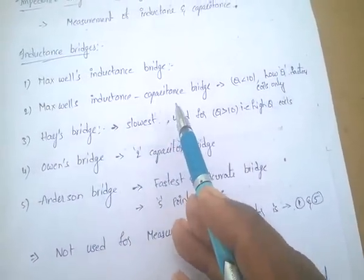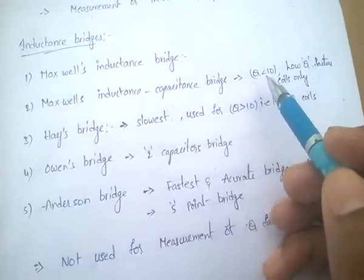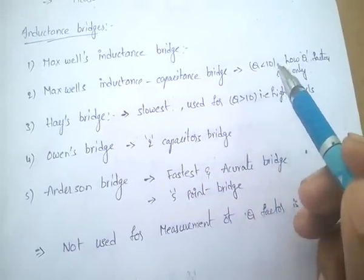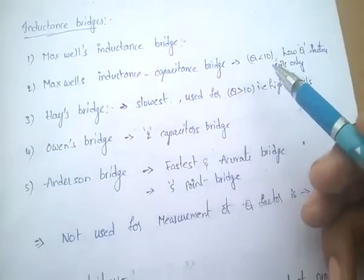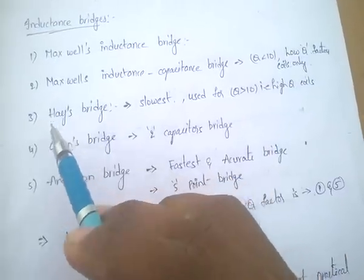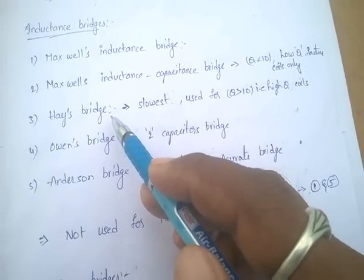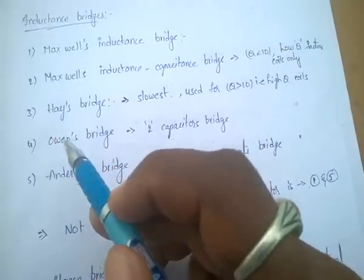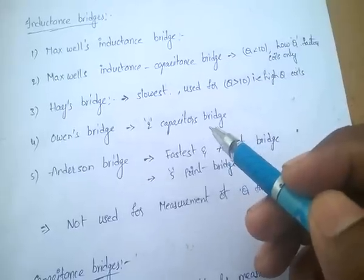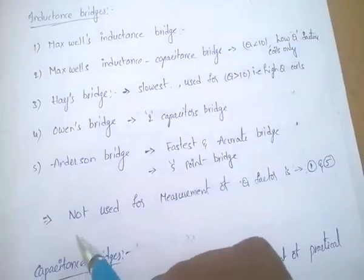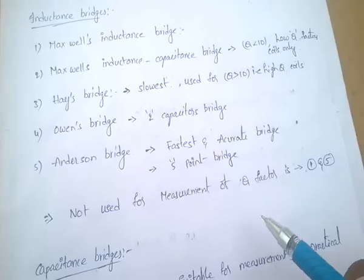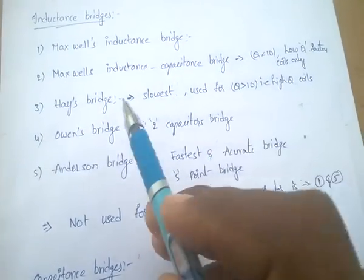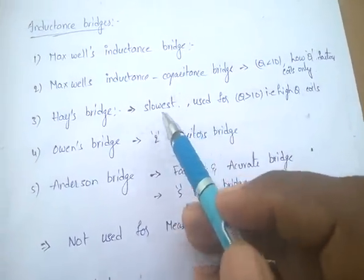Maxwell's inductance-capacitance bridge is mainly suitable for Q factor less than 10 — that means it is mainly suitable for low Q factor coils only. Hayes bridge is the slowest bridge, meaning it can take a long time to give the measuring value. Hayes bridge is also used for Q factor greater than 10, that is, for high Q factor coils.